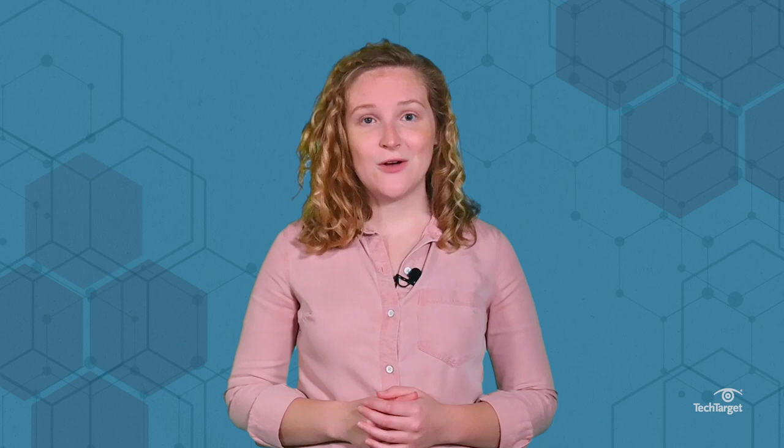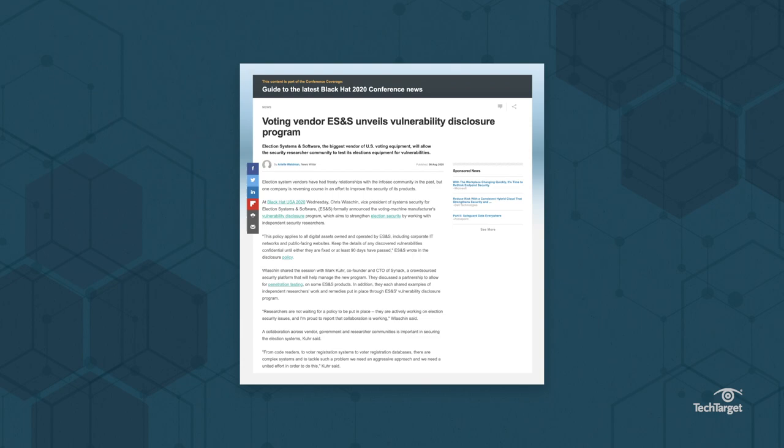Technology can help voter turnout and safeguard elections, but it can't always stop misinformation from influencing voters. Learn about election systems and software, the biggest vendor of U.S. voting equipment and their vulnerability disclosure program, by hitting the link above and in the description below.